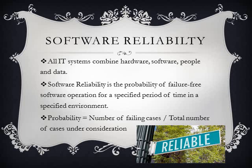We have a specific formula used to calculate the probability of a system crashing. It's calculated by the number of failing cases divided by the total number of cases under consideration. Using the formula, failure probability is calculated by testing a sample of all the available input states.